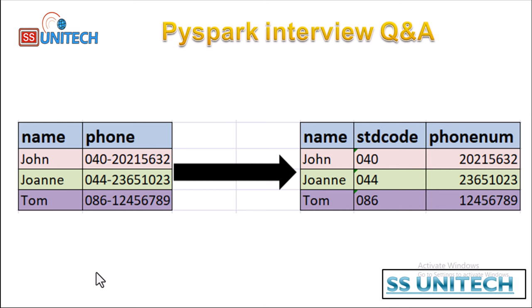In the output, our expectation is that we should have three columns instead of two. The first column will be the name, same as in the input. Then, based on the minus symbol, we will split the phone number string into the STD code and the phone number. Let's see how we can achieve this in PySpark.